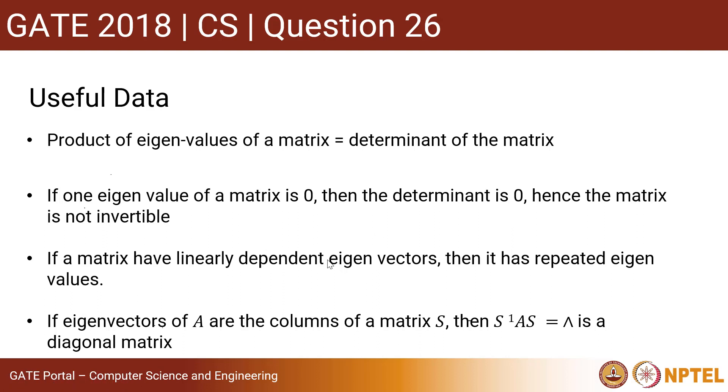Some useful data to solve this question. Product of eigenvalues of a matrix equals determinant of matrix. If one eigenvalue of a matrix is 0, then the determinant is 0, hence the matrix is invertible.